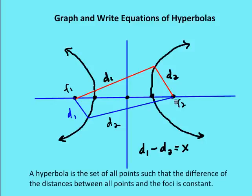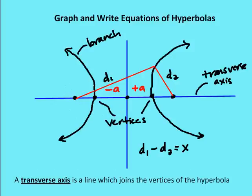Remember that an ellipse is different — an ellipse is a set of all points such that the sum of the distances from the foci to the ellipse is constant. With a hyperbola, it's the difference. That's the definition.